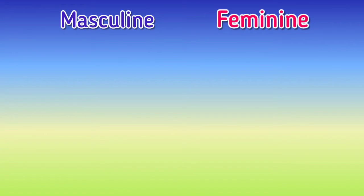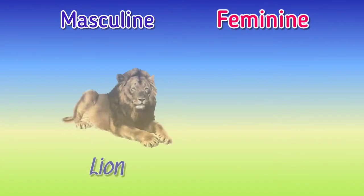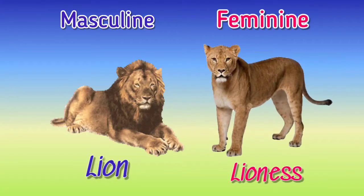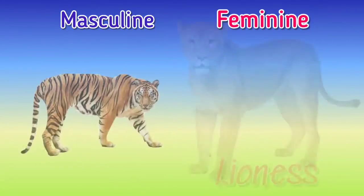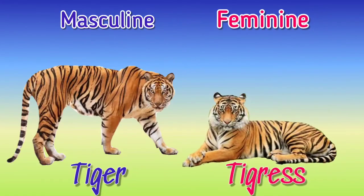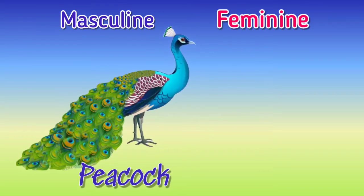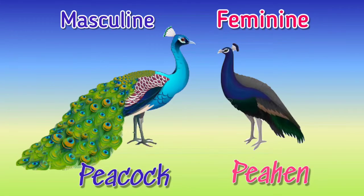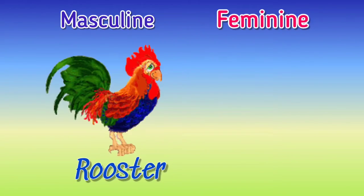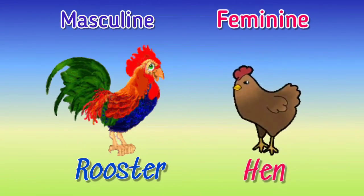For example: lion and lioness, tiger and tigress, peacock and peahen, rooster and hen.